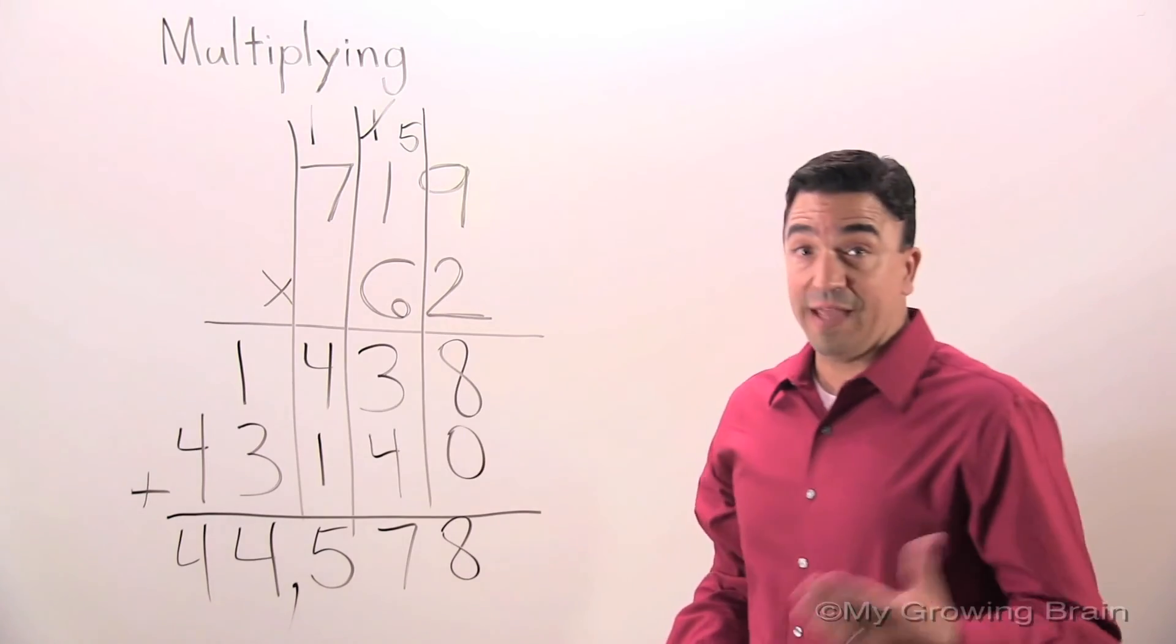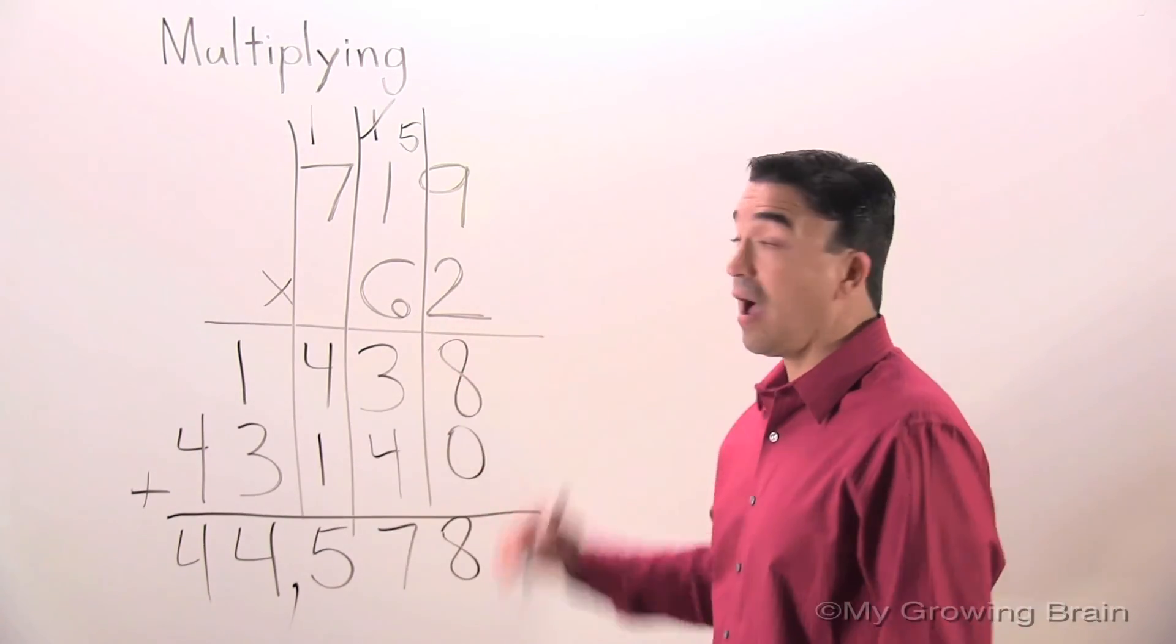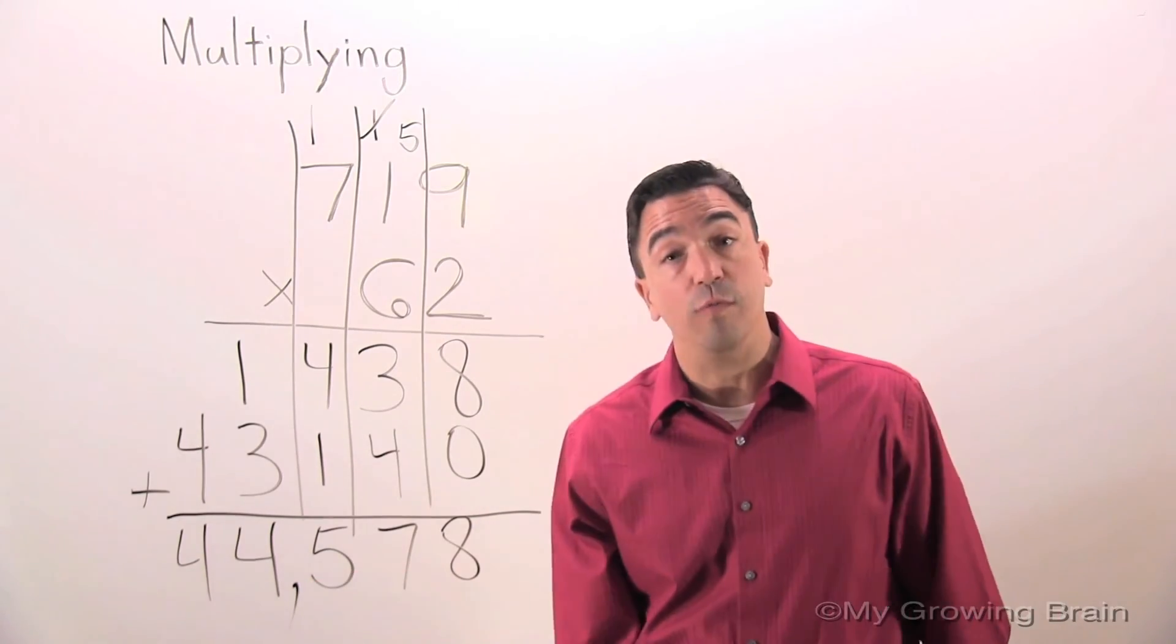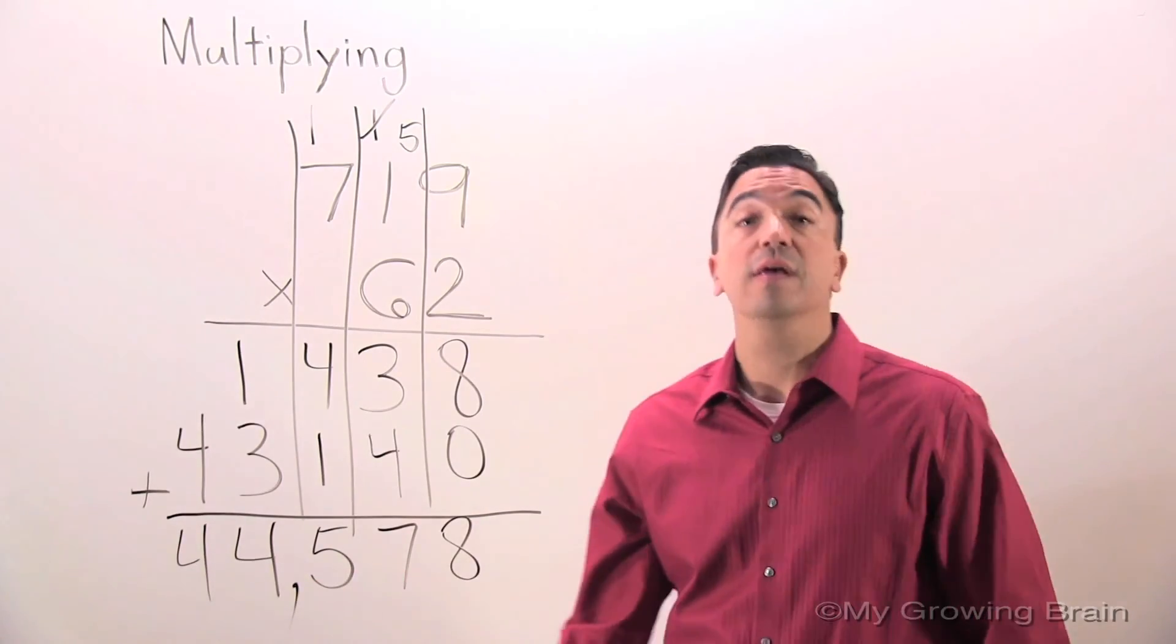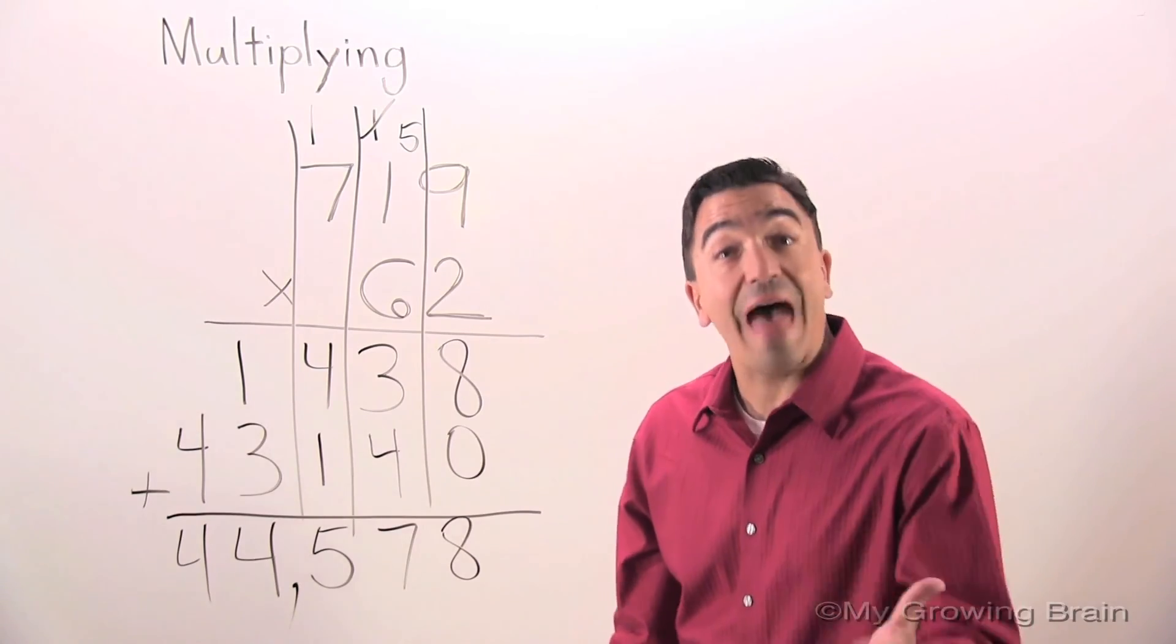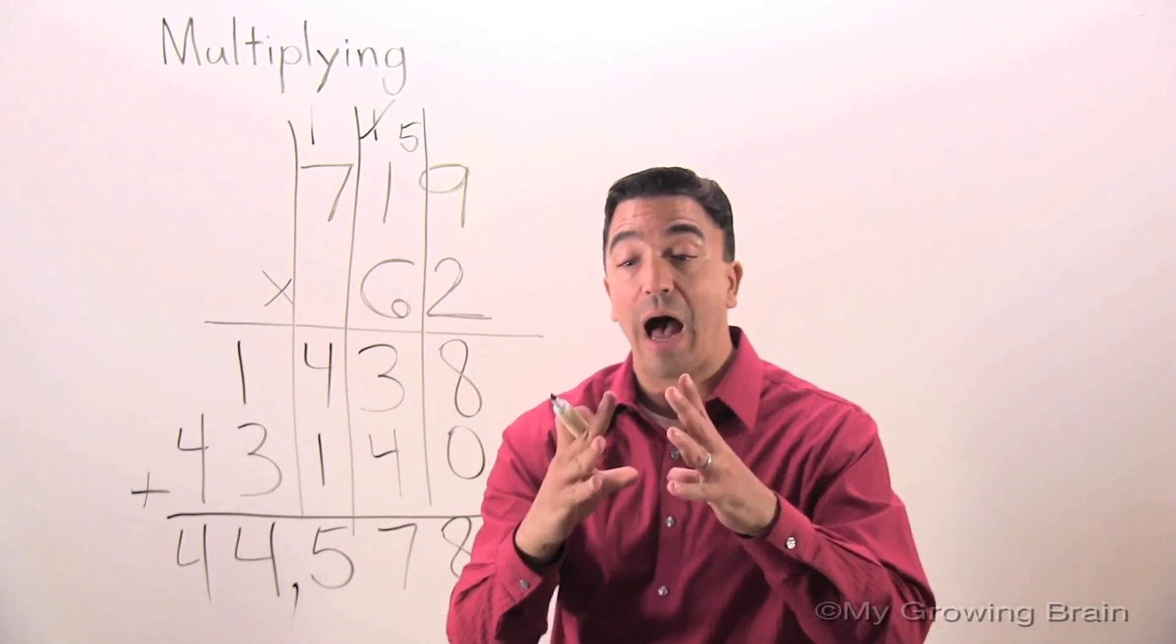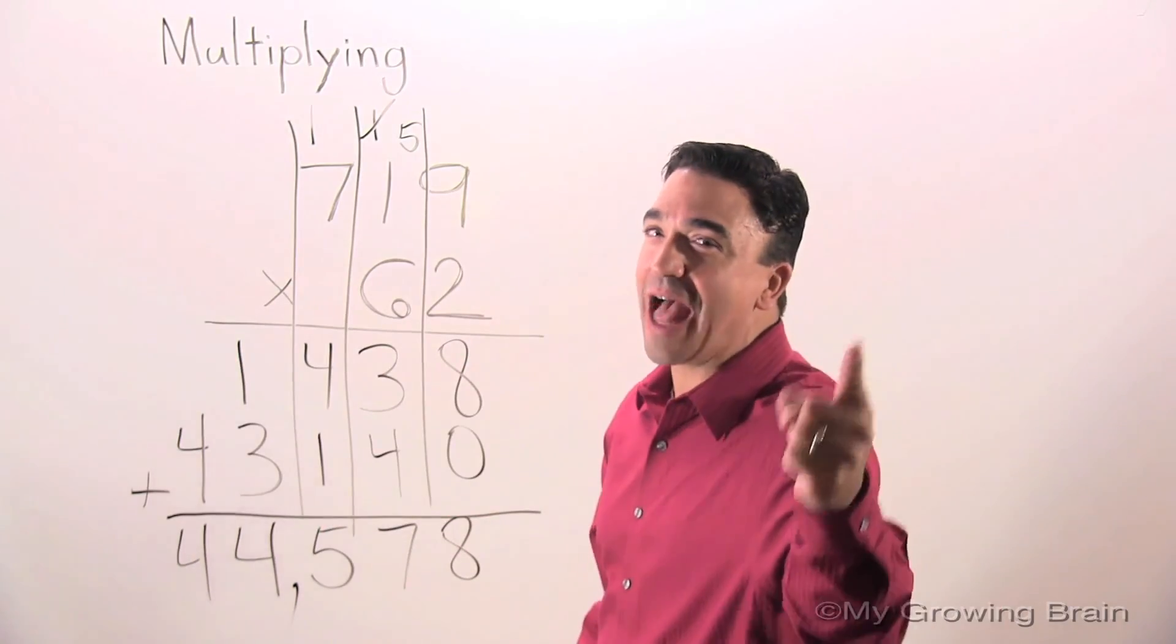The answer to 719 times 62 equals 44,578. That concludes our lesson on multiplying. Coach Mike at My Growing Brain, Challenge Yourself.